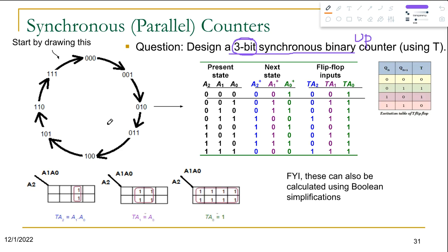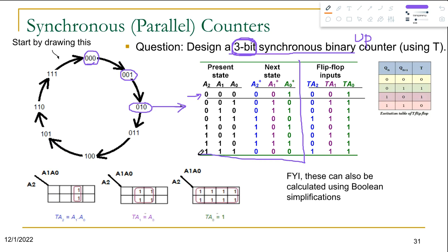Once we have the state diagram, we can build a state table from it. Since we're building for three bits, the present state part has three variables: A2, A1, A0, and the next state has three variables: A2+, A1+, and A0+. From state zero the next state is 001, from 001 the next state is 010 — we just follow the diagram to fill in the state table.